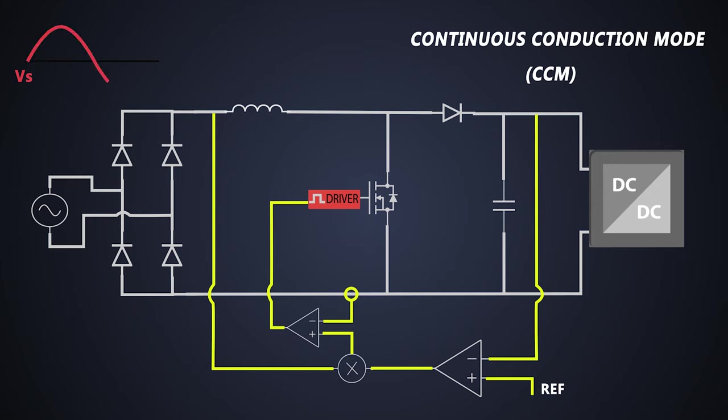If we check the continuous conduction mode, the current of the inductor doesn't go to zero, it follows the input voltage. The ripple of the inductor current is very low, so the value of this inductor is very high and the design gets bulkier. But this type of control strategy is very helpful for high power applications.